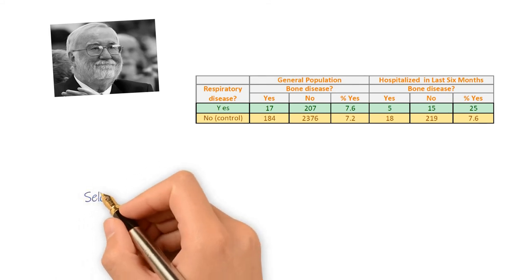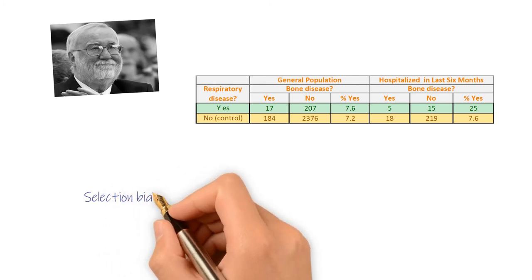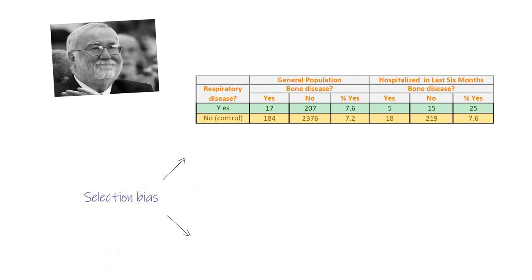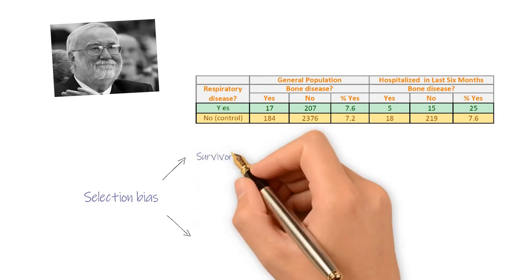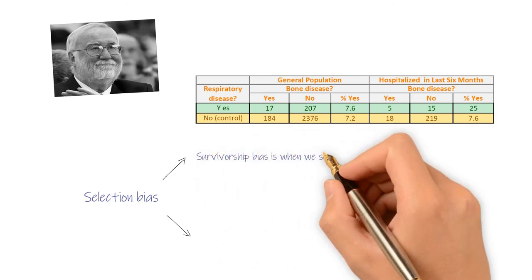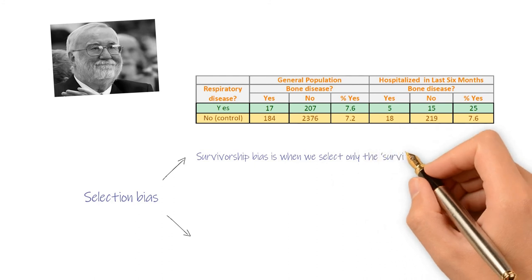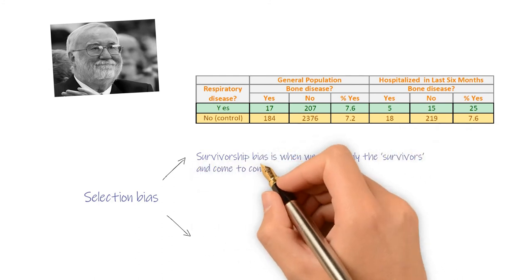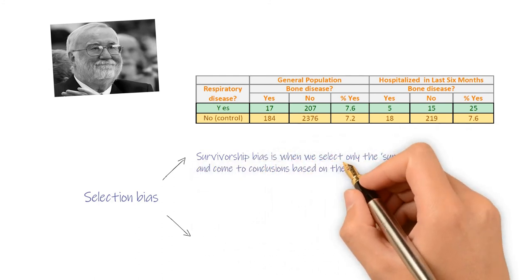Survivorship bias and admission rate bias are both selection biases. They happen because of the incomprehensive sample. Survivorship bias is when we select only the survivors and come to conclusions based on their attributes without looking at the whole dataset.